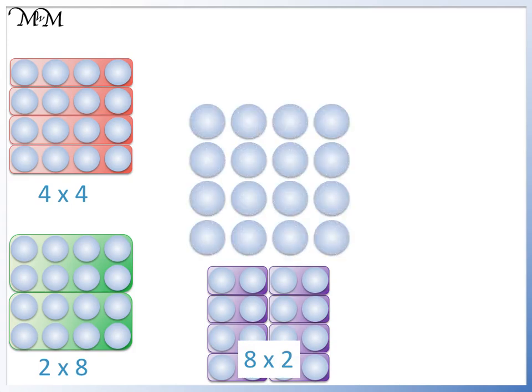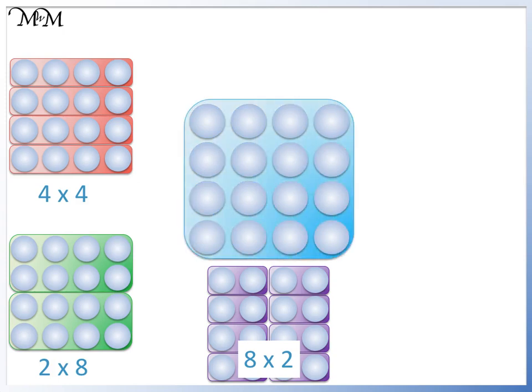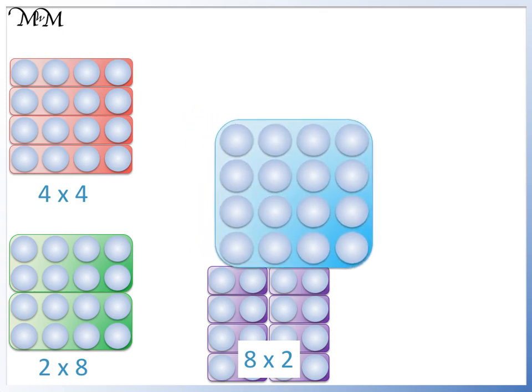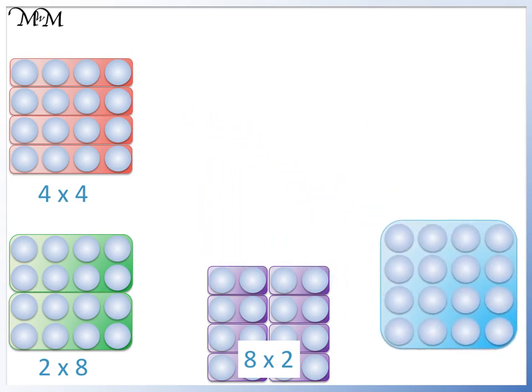We could also have just 1 group, with all 16 counters. This is 1 group of 16, which is the same as 1 times 16.